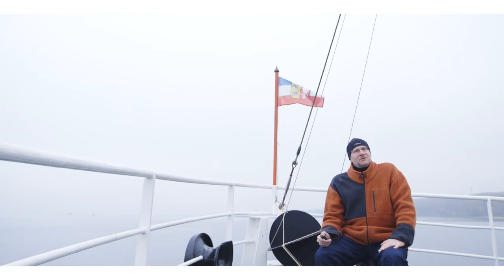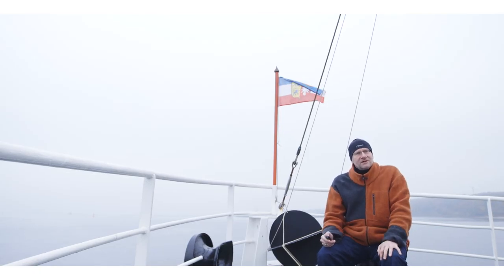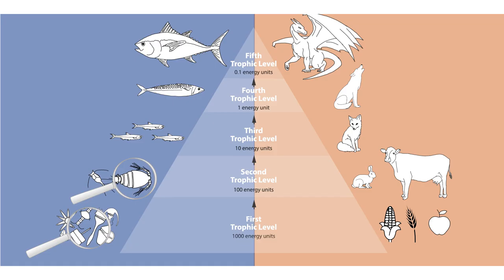To give you another example: if you put a mackerel on your plate, this would correspond on land to eating a wolf who has entirely fed on foxes, because a mackerel is already at the fourth trophic level. So we would actually be eaters of wolf-eaters — and so would be the tuna.